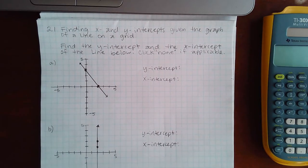Okay, here we have 2.1 finding x and y intercepts given the graph of a line on a grid. Find the y-intercept and x-intercept of the line below. Click none if applicable.